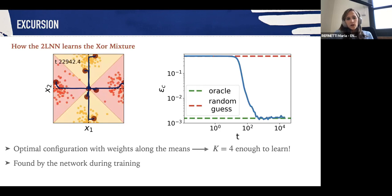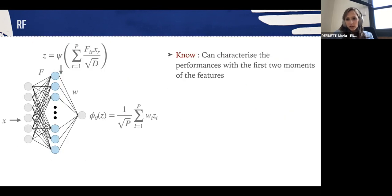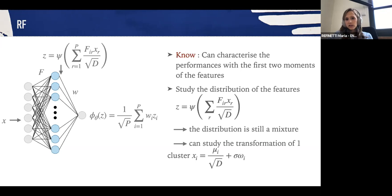Let us now go back to our problem and see if we can analyze random features. As we know, since random features only perform linear regression on the features, their performance is completely determined by the first two moments of these features. What we need to study is how the projection transforms the distribution. Interestingly, the distribution of the features is still a mixture distribution, that means we can study the transformation of only one cluster.